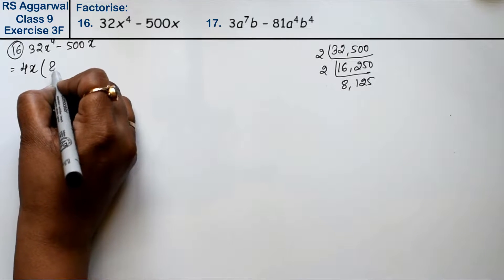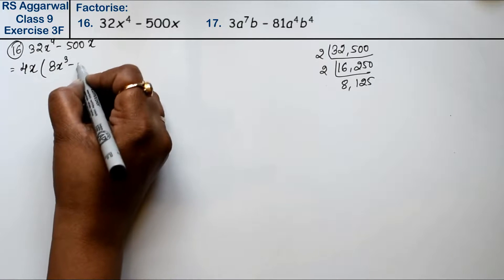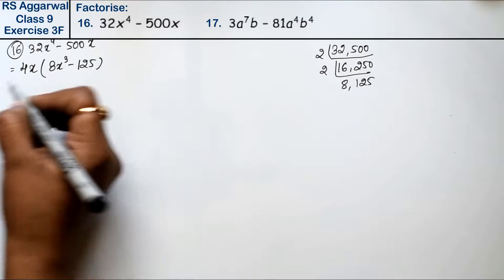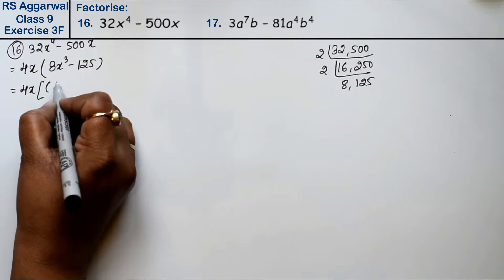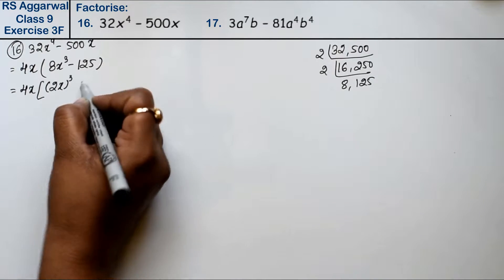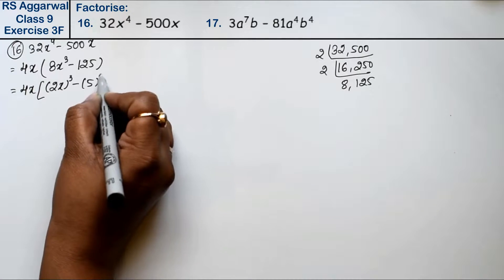Inside we have 8x³ minus 125. So we have 4x, and in the bracket, this becomes (2x)³ and 5³.